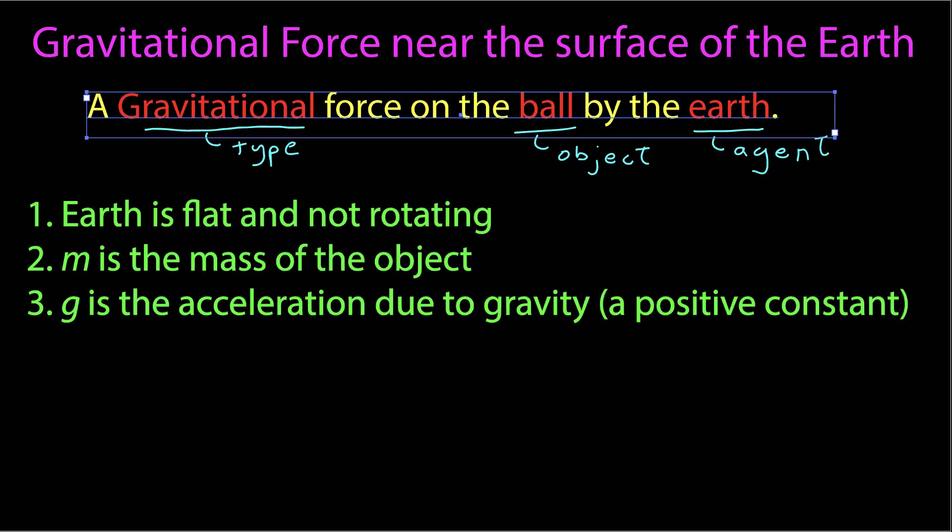The assumptions going into our gravitational force model are that, first, the Earth is flat and not rotating. Second, m is the mass of the object, and g is the acceleration due to gravity, which is a positive constant.